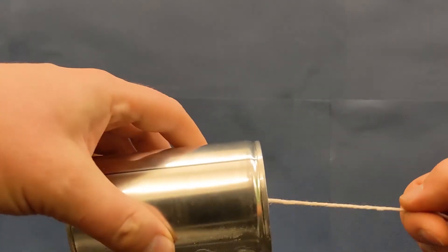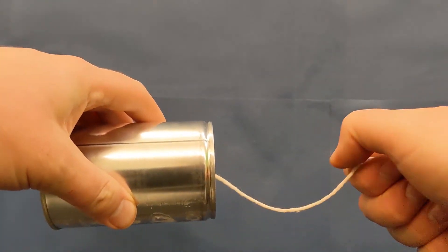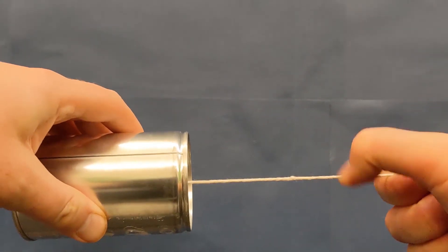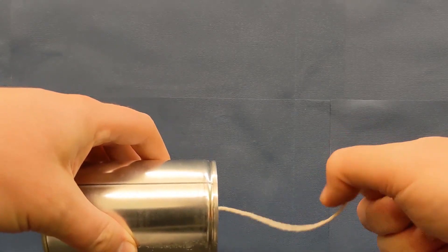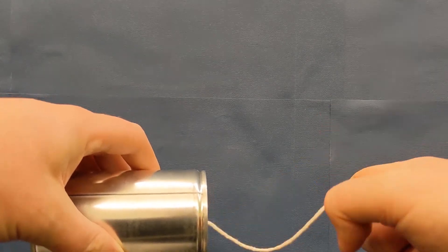When the string's taut, the string can't do this, so the vibration rockets along the length of the string instead. You can experiment with this. Try plucking the string as you would a guitar string. Notice you can hear a musical sound when the string is taut, but nothing when the string is completely loose.